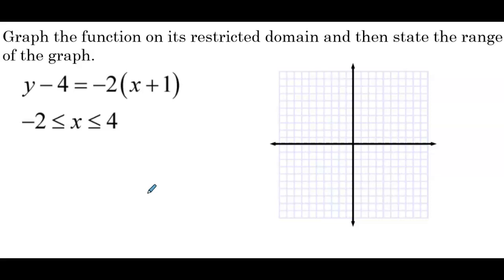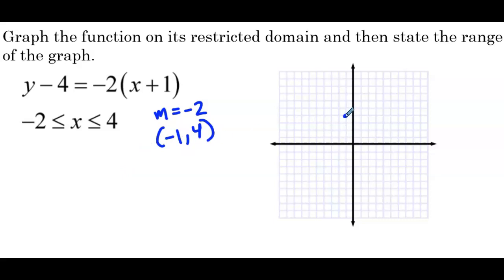The function is in point-slope form, so we'll identify the slope as negative 2 and a point on the line as (-1, 4). Normally we'd start plotting using that point, but now we have to plot points only within the domain restriction. Since the domain starts at negative 2, let's go backwards first: up 2 and left 1 from (-1, 4) stops us at x equals negative 2.